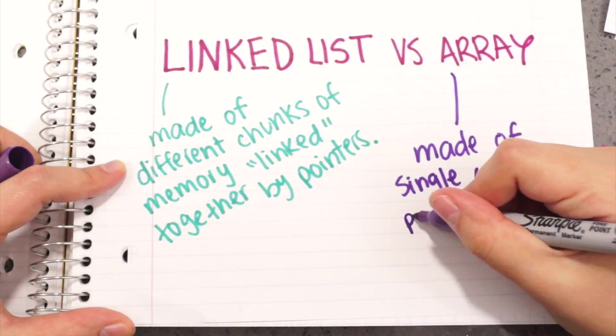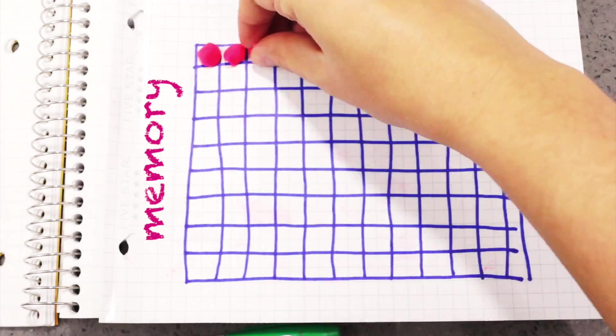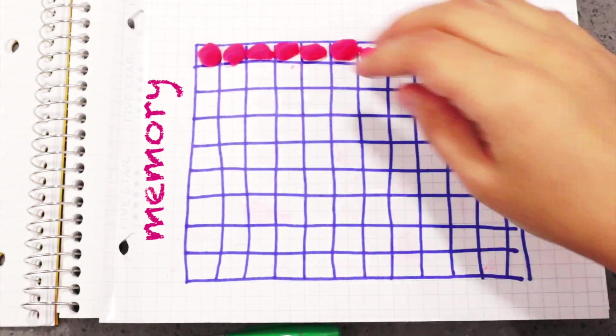Arrays are made of single contiguous pieces of memory, so the array will look like this in the grid, where all the pink blobs are right after the other.